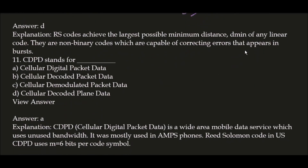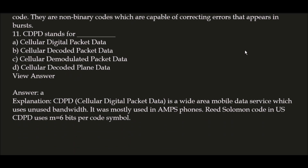Next question: CDPD stands for? This is a very important and frequently asked question. The correct answer is option A — Cellular Digital Packet Data. CDPD is a wide area mobile data service which uses unused bandwidth. It was mostly used in AMPS phones, and Reed-Solomon codes are used in US CDPD with M = 6 bits per code symbol.